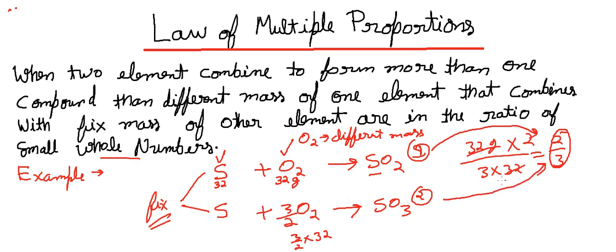According to this law, oxygen combines with sulfur in both equations with a simple whole number ratio. The ratio of different masses of oxygen is 2:3. Let's look at one more example to understand the Law of Multiple Proportion.